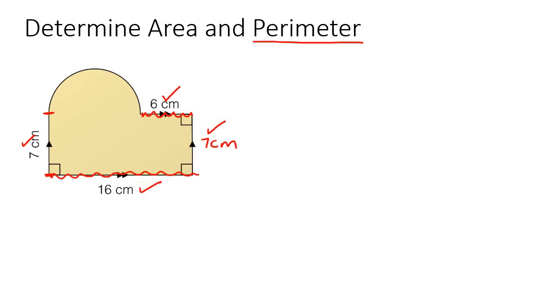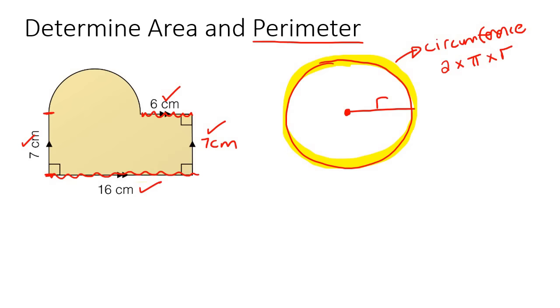Now remember, for a circle, let's quickly draw a circle. The distance to calculate the distance around the circle is called the circumference. And the formula for circumference is 2 multiplied by pi multiplied by the radius. And remember that the radius is the distance from the middle of the circle to the outside.